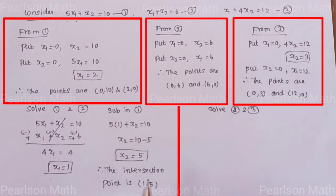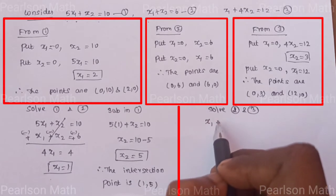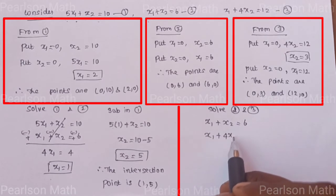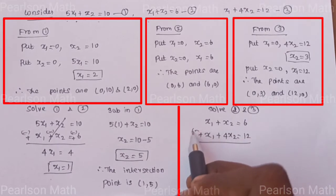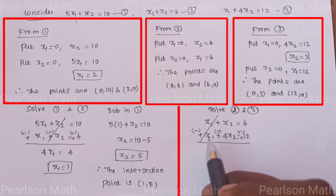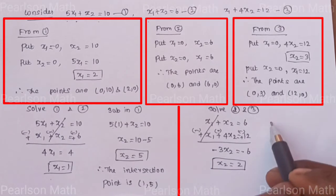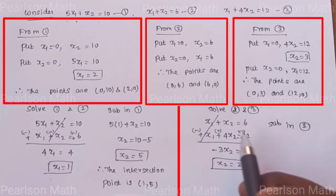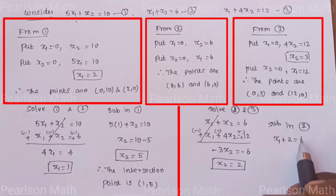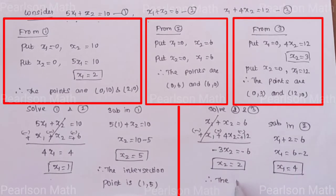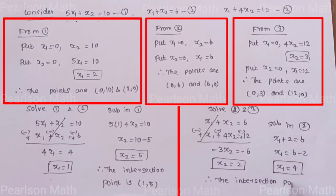Now solve equations 2 and 3 simultaneously. Second equation: x1 plus x2 equal to 6. Third equation: x1 plus 4x2 equal to 12. Sign change to eliminate x1 — gives minus 3x2 equal to minus 6, so x2 equal to 6 by 3, which is 2. Substitute x2 equal to 2 in the second equation: x1 plus 2 equal to 6, so x1 equal to 4. Therefore, the intersection point is (4, 2).